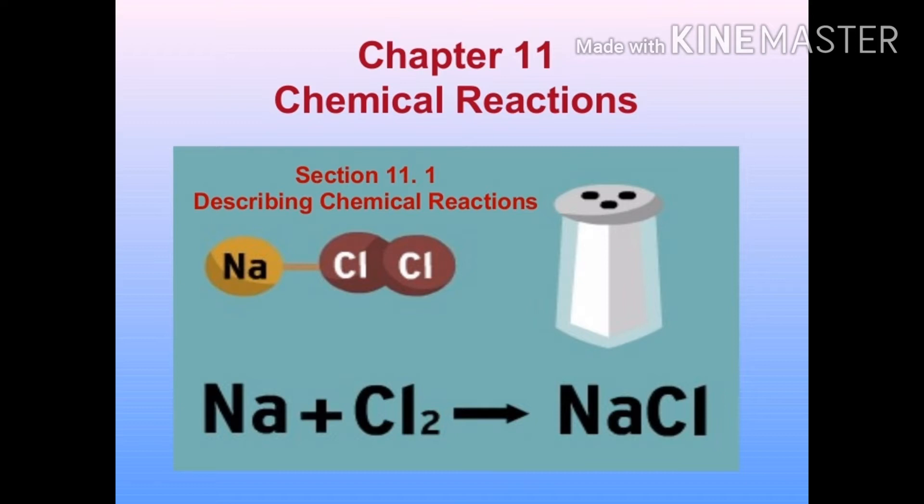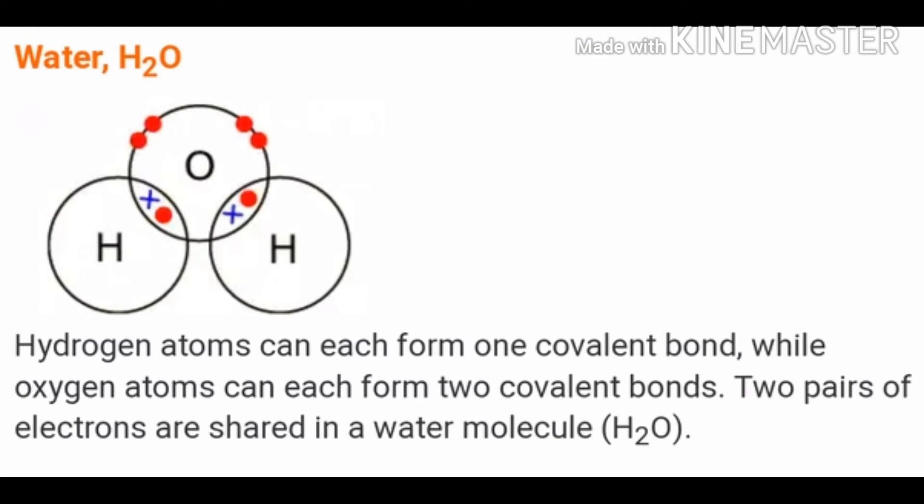You already learned previously how compounds are formed. Compounds are formed by the chemical combination of elements. During this process, the chemical bond is formed between the elements in order to complete the octet state, either by giving, taking, or sharing electrons with each other in order to attain the stable electronic configuration.